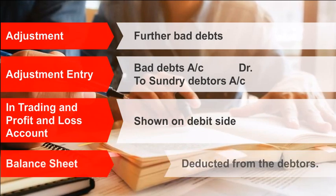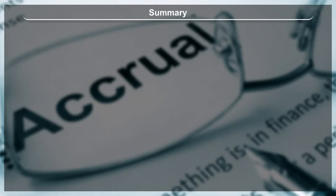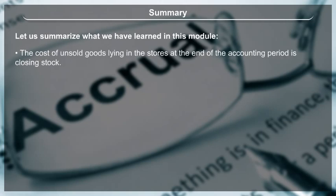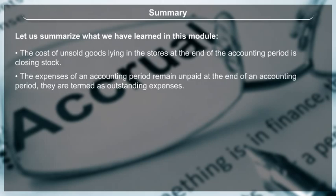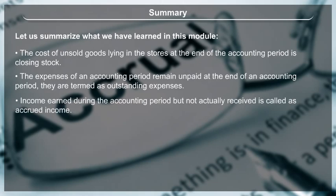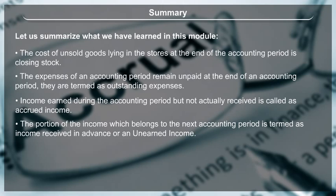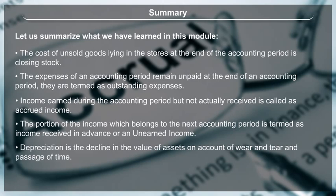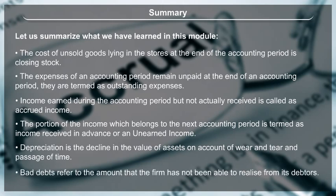Summary: The cost of unsold goods lying in stores at the end of the accounting period is closing stock. The expenses of an accounting period that remain unpaid at the end of the period are termed outstanding expenses. Income earned during the accounting period but not actually received is called accrued income. The portion of income which belongs to the next accounting period is termed income received in advance or unearned income. Depreciation is the decline in the value of assets due to wear and tear and passage of time. Bad debts refer to the amount that the firm has not been able to realise from its debtors.